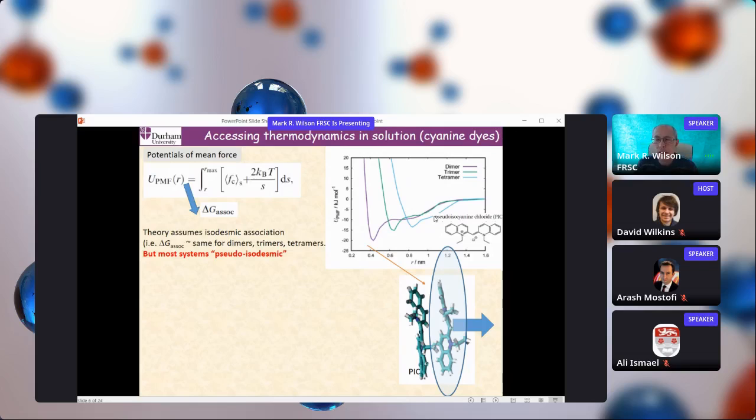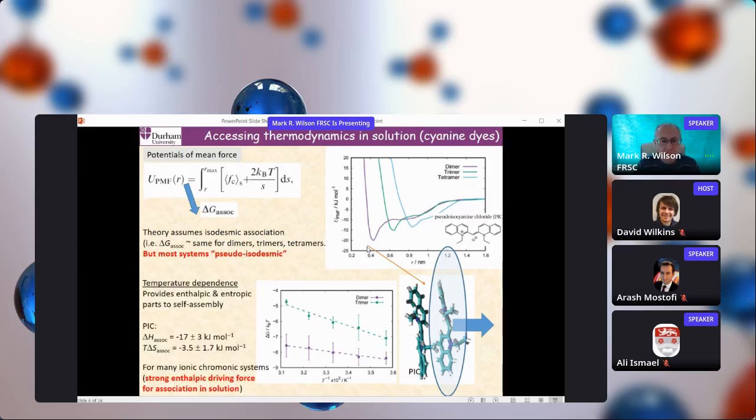Now that's only approximately correct. In most of the systems we look at, a better word is pseudo isodesmic because it's usually the dimer which is much more strongly bound. Then the trimer and tetramers and so on seem to have a very similar potential of mean force. These calculations can be done as a function of temperature. If you do that, you can use a van't Hoff plot and extract out the enthalpy and the entropic contributions to the free energy. If you do this for a molecule such as PIC here, you find that most of the contribution to the free energy for this system, which is cationic in nature, arises from the enthalpy contribution to association. There's a very small T delta S term, which in this case is negative and actually does favor the association, but in some cases is small and positive.